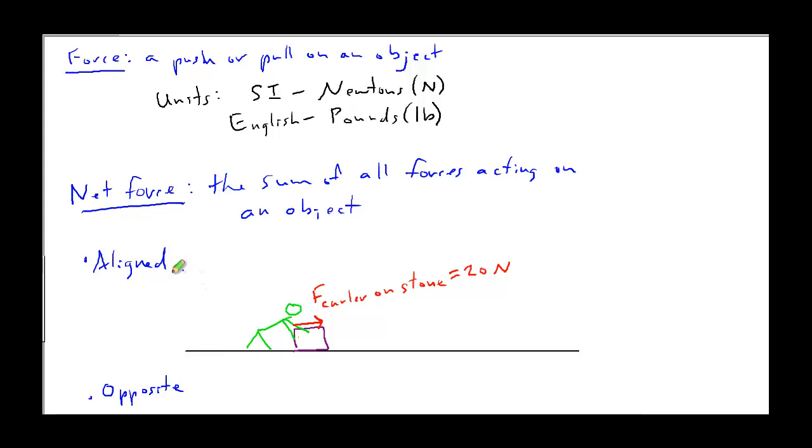So going back to the aligned forces. What if maybe this is Baby Jenny. And here is Mama. Mama is teaching Baby Jenny how to throw the stone. And Mama's pretty strong. Mama's also exerting a force on it. But her force will say force of Mama curler on stone. So let's make her force 30 Newtons. We have two forces acting on the stone. And the net force is going to be 30 Newtons plus 20 Newtons.